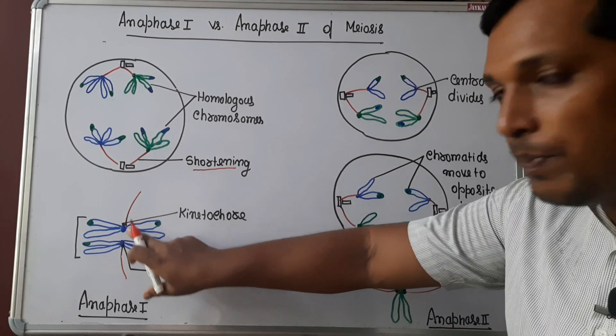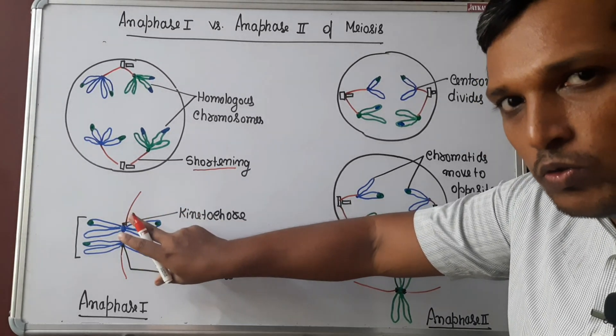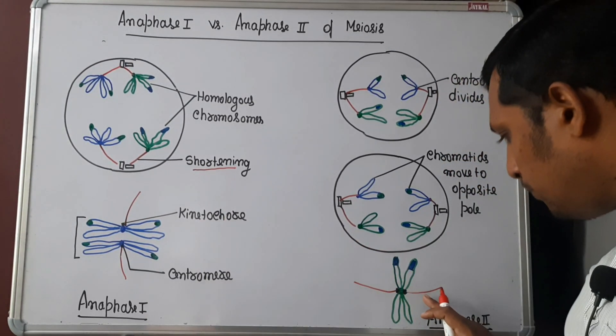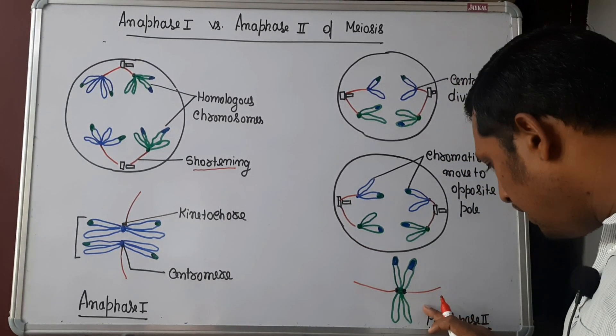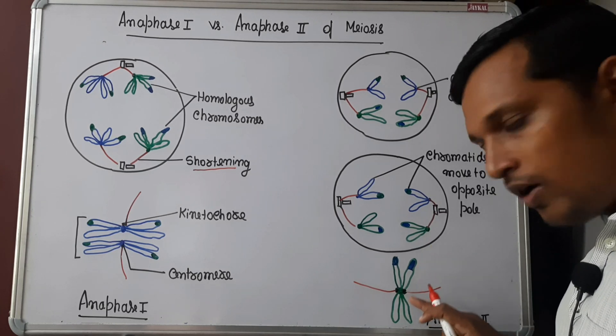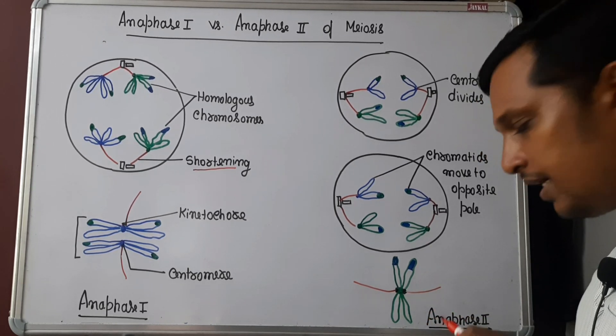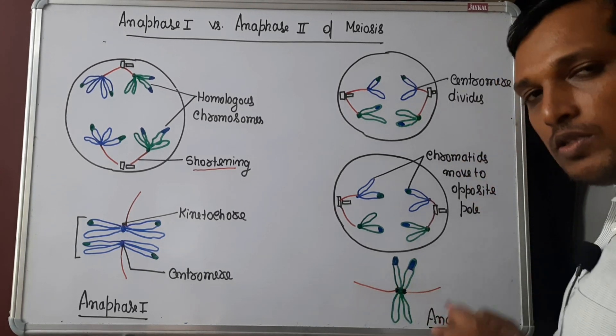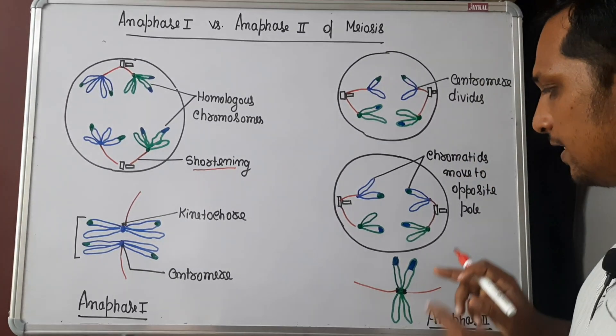Now compare: in anaphase 1, to one homologous pair, total two spindle fibers, or to one chromosome, one spindle fiber. But when it comes to anaphase 2, or in the previous metaphase stage, to a single chromosome there will be two spindle fibers attaching at both ends.